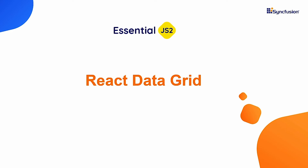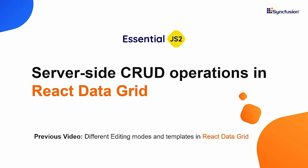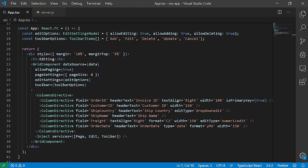Welcome back everyone to this series on working with the React Data Grid. Last time you saw about the different editing modes and the custom templates used while editing the records of the React Data Grid. In this video you will see how to handle the CRUD operations at the server side using the Data Manager. You can get this sample from the downloadable link in the description below or you can watch my previous video shown in the above card.